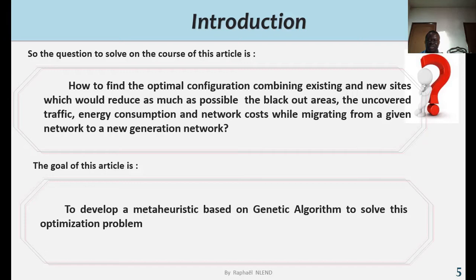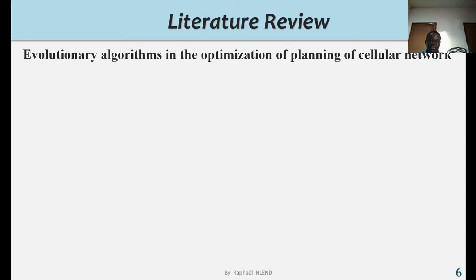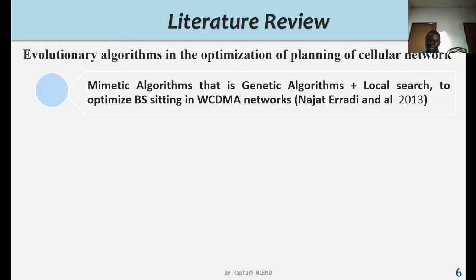As concerned literature review, one can say that many authors have worked on evolutionary algorithms in the optimization of planning of cellular networks, such as Najaf, Iradian, and Al in 2013, who worked on mimetic algorithm, that is genetic algorithm plus local search, to optimize base siting in WCDMA networks.